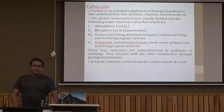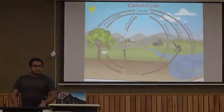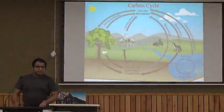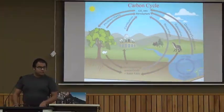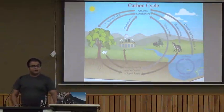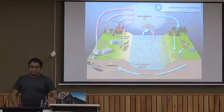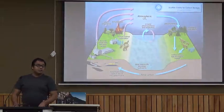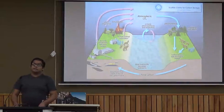This diagram shows the carbon cycle. We can see processes like respiration, evaporation, combustion, and photosynthesis which are involved in the carbon cycle. There is also a diagram showing the involvement of organic life forms — plants and animals — in the carbon cycle.